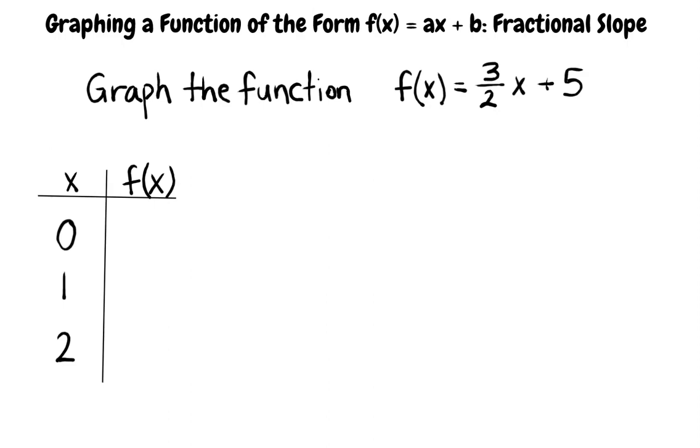Now we will substitute each x value into the function to solve for the corresponding f of x value. Input 0 for x. We have 3 over 2 times 0 plus 5. Anything times 0 is 0, so this simplifies to 0 plus 5, which is equal to 5. Therefore, the first point is 0, 5.